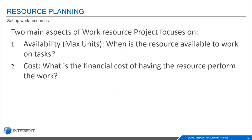When looking at work resources specifically, Project focuses on two things: the availability of your resources — their max units — and the cost associated with having that resource do the work. You can assign a standard rate, an overtime rate, or a cost per use. For example, if you use someone from another consulting company and every time there's a $100 charge, that's a cost per use that you can build into your schedule.